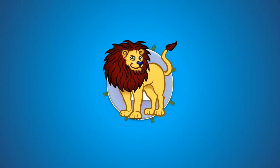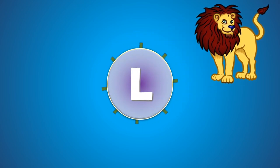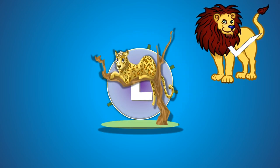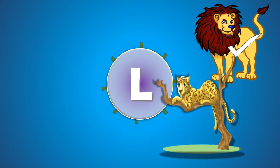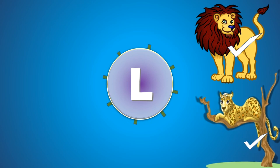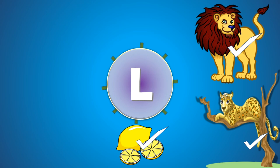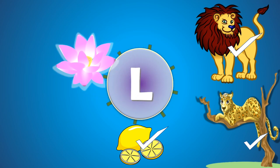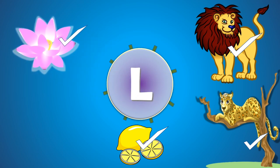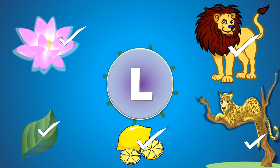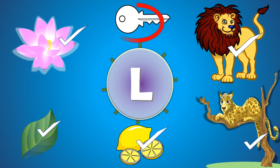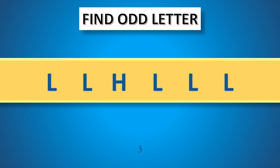L for lion, correct, yes. L for leopard, correct, yes. L for lemon, correct, yes. L for lotus, correct, yes. L for leaf, correct, yes. L for he — no, it's wrong. Find odd letter.